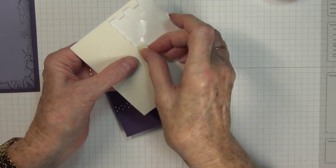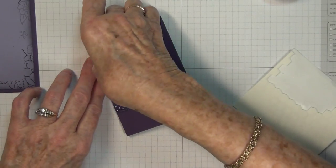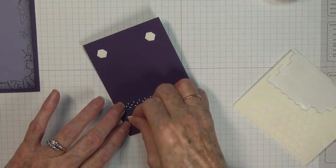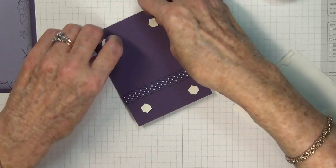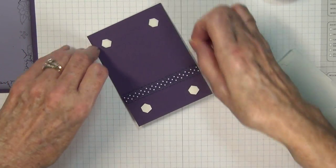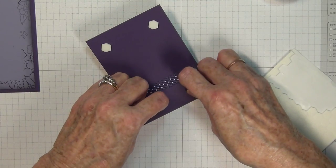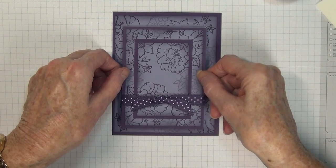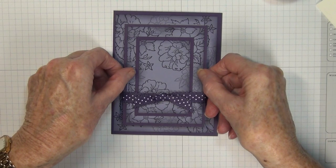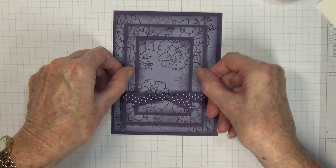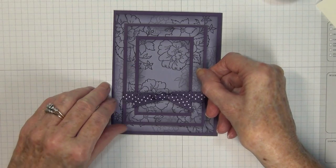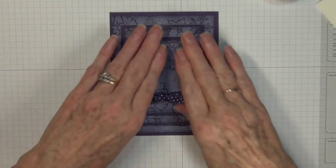Okay, so next let's put some dimensionals onto our corners, and then we are ready to adhere this onto our card base. Take your time in doing this because you want to make sure that this lines up. This is the whole purpose for this, is for these flowers to match up. And so we have it.